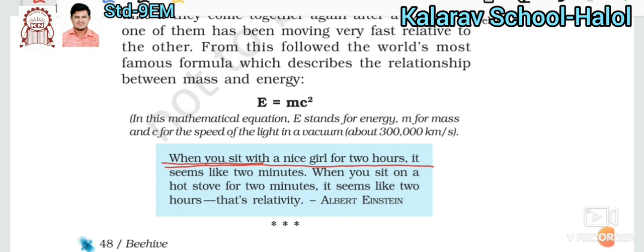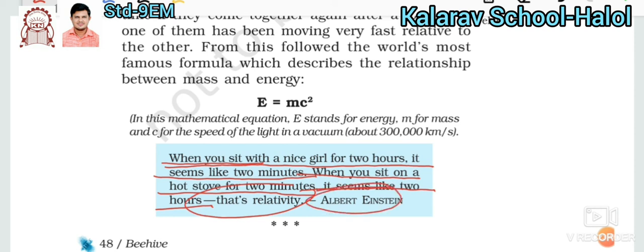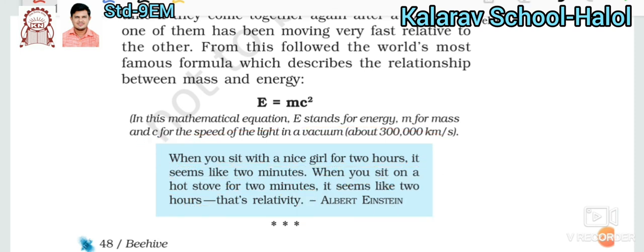Einstein explained relativity with a famous example: 'When you sit with a nice girl for two hours, it seems like two minutes. When you sit on a hot stove for two minutes, it seems like two hours. That's relativity.' This sentence is Albert Einstein's own.